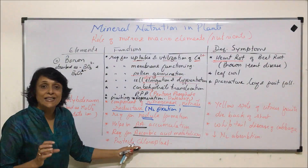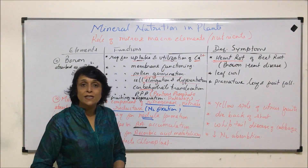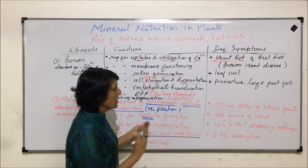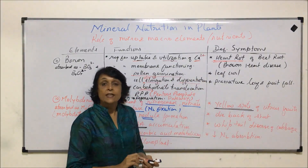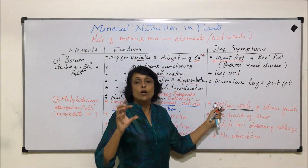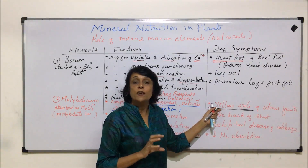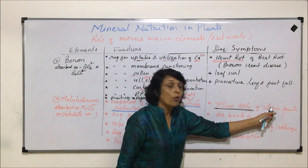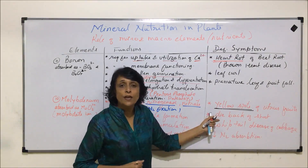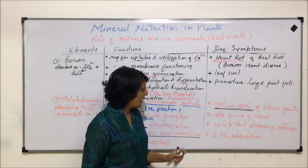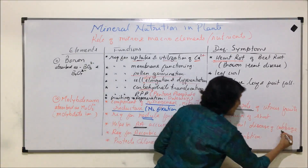Molybdenum is also required for ascorbic acid (vitamin C) metabolism and acts as a protective factor for chloroplasts, maintaining chloroplast structure. Its deficiency causes yellow spots on citrus fruits, making their skin appear patchy, and die back of shoot has been reported in many plants.